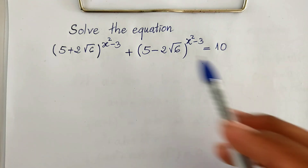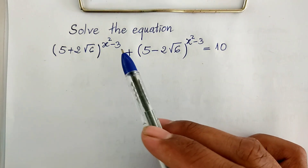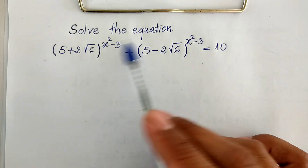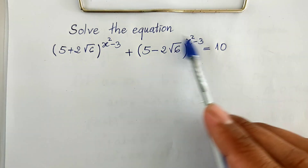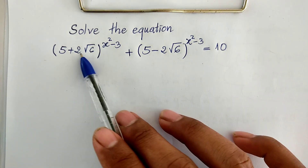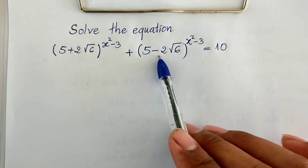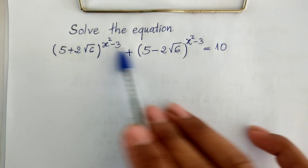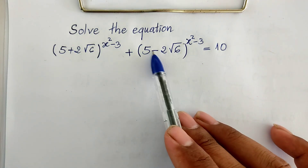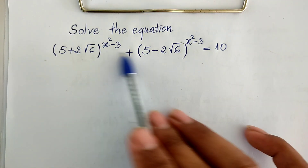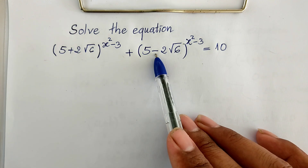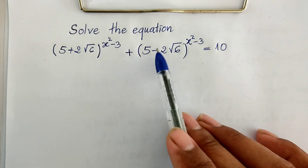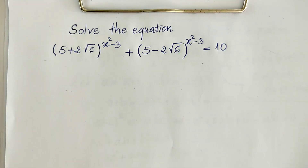We have the same exponent in this equation, but the base is different. It differs only in the sign — one is plus and one is minus. Now, we use a trick to solve this equation.